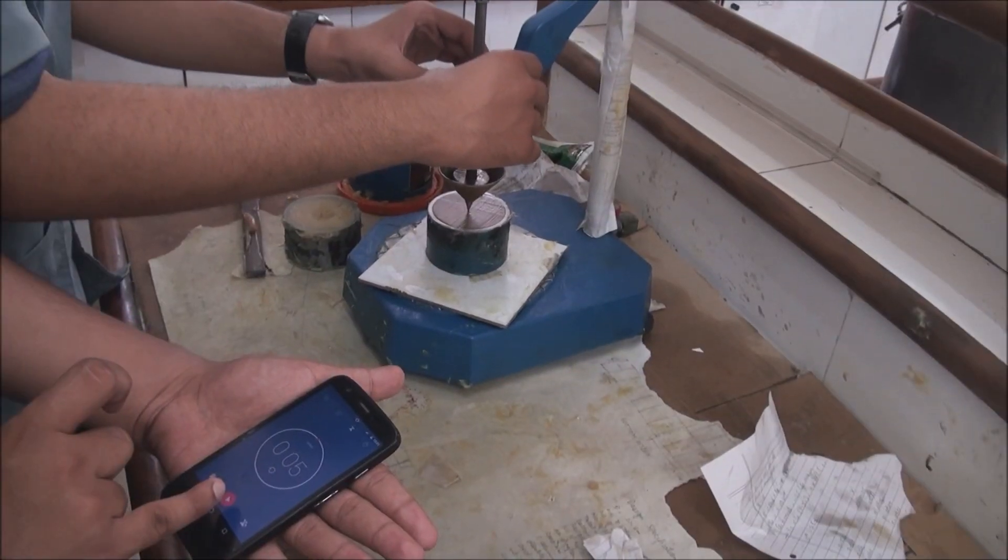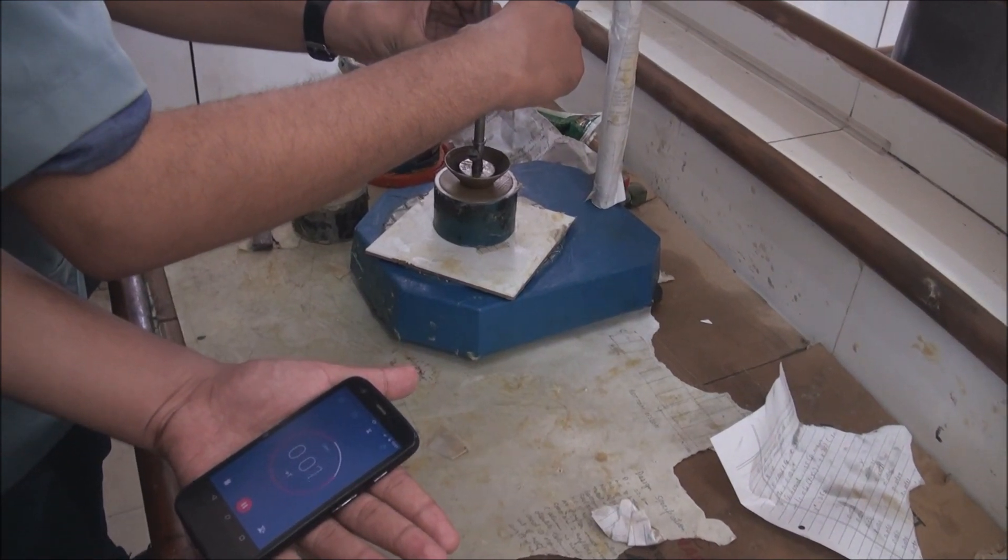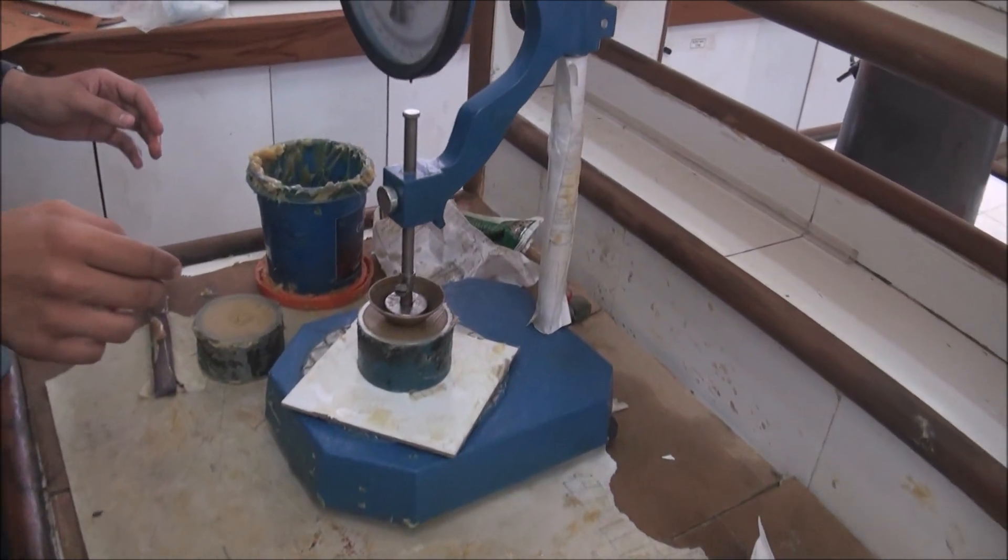Now set the timer on the stopwatch to 5 seconds and press the button till the timer runs out. After timer stops, release the button and adjust the needle with the rod containing the cone.